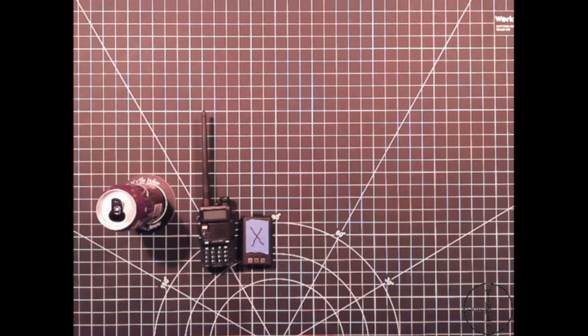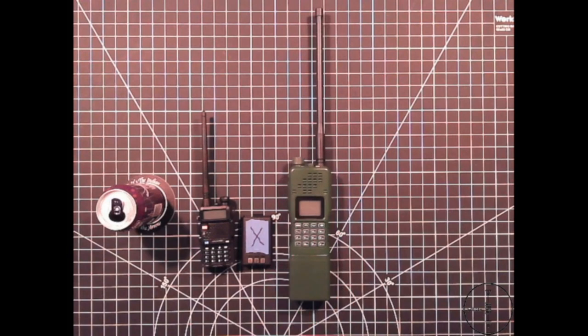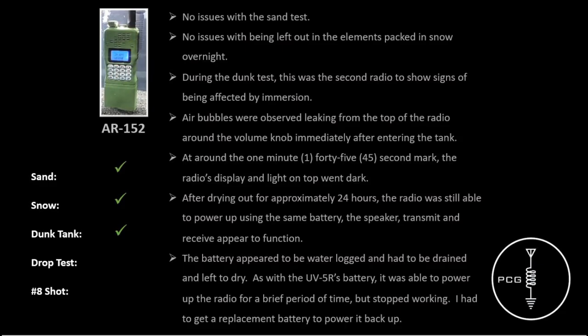Next up is the AR-152, and again, this is our IP-rated radio. No issues with the sand test or being left out in the elements in snow overnight. During the dunk test, this was the second radio to show signs of being affected by immersion. Air bubbles were observed leaking from the top of the radio around the volume knob immediately after entering the tank. At around the 1 minute 45 second mark, the display and light on top went dark.